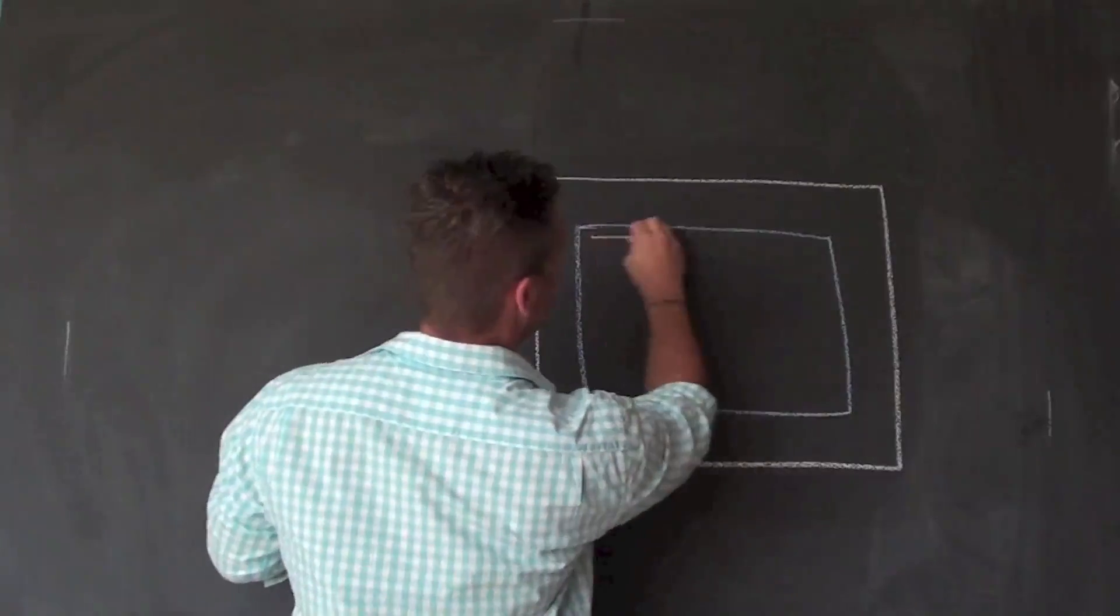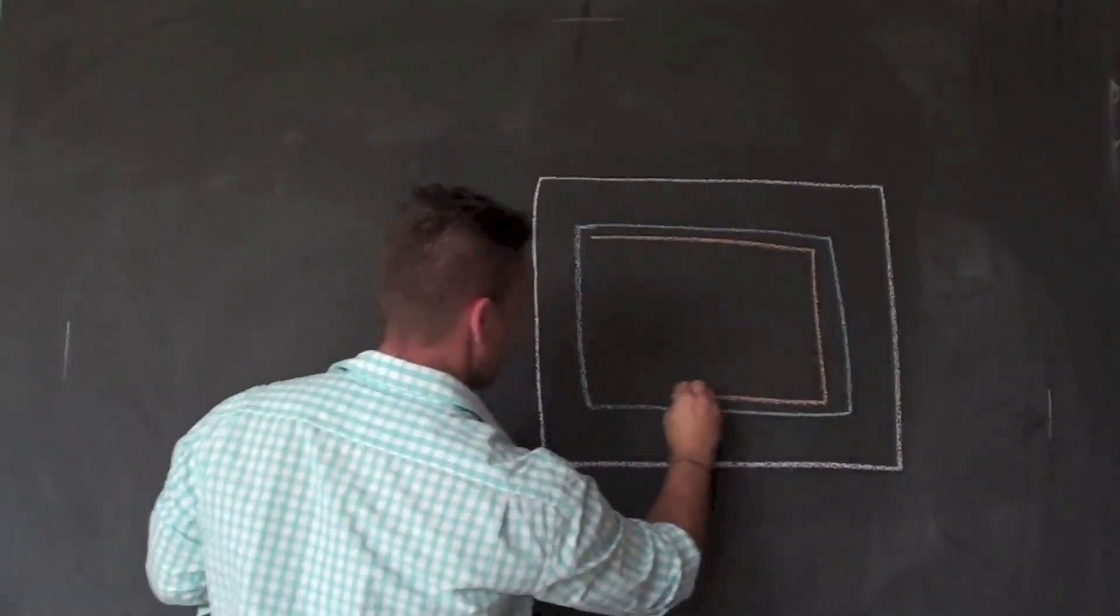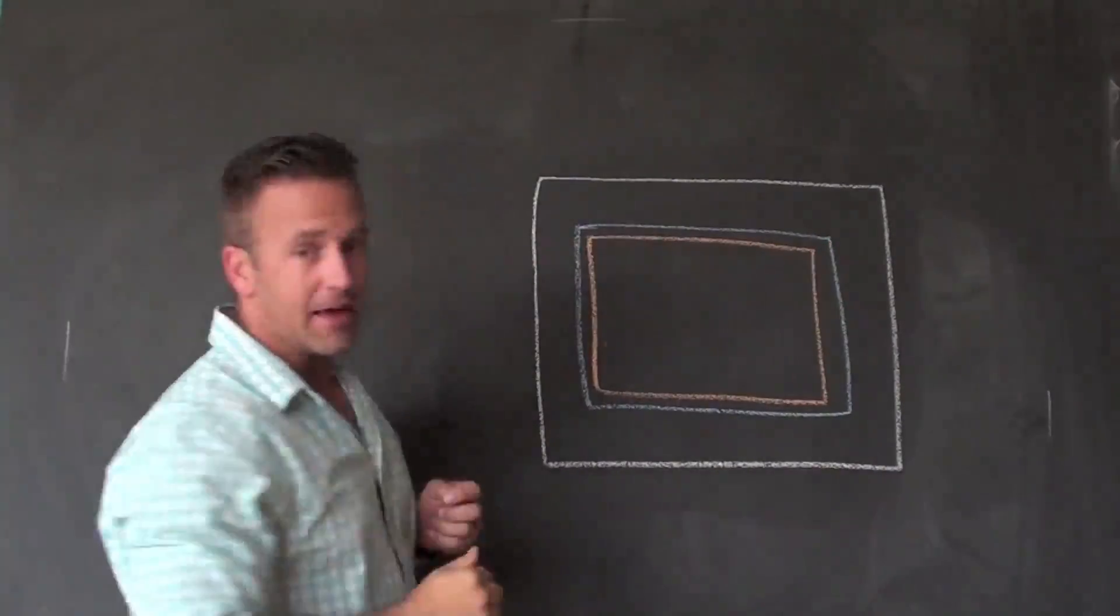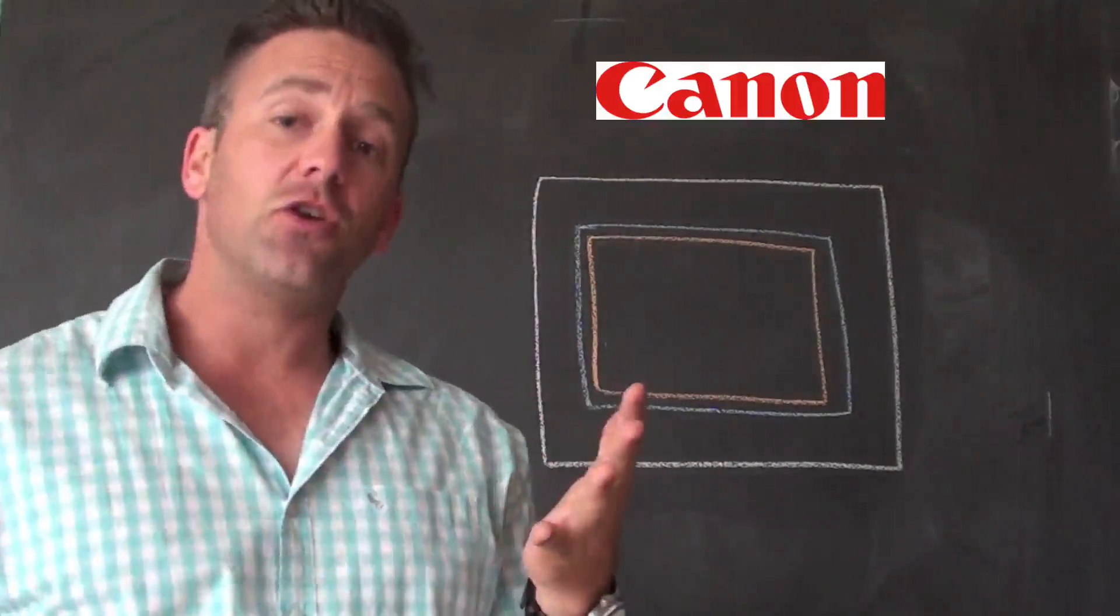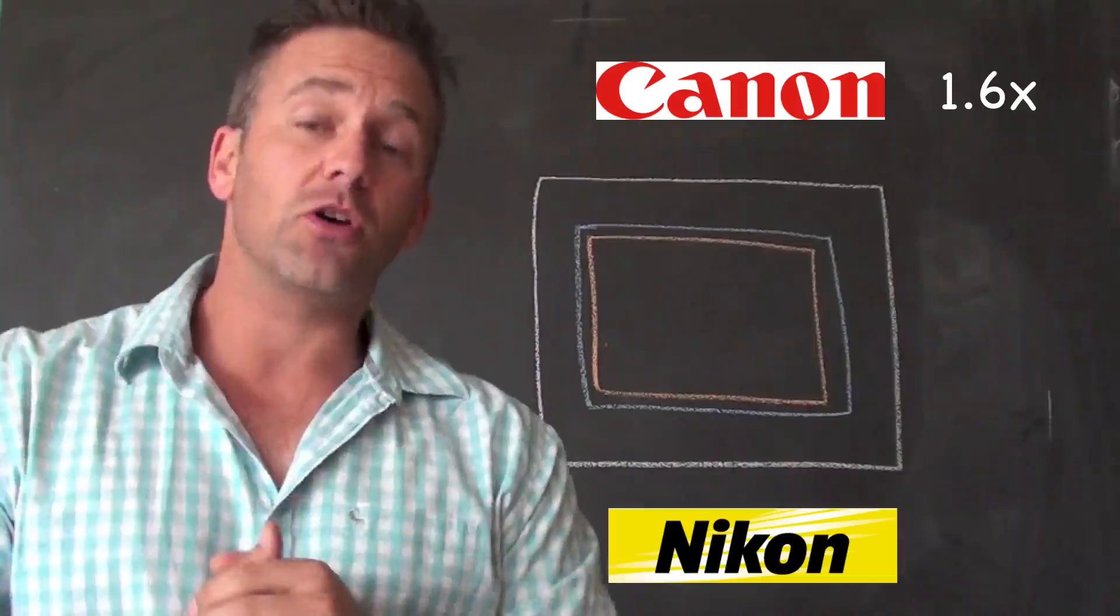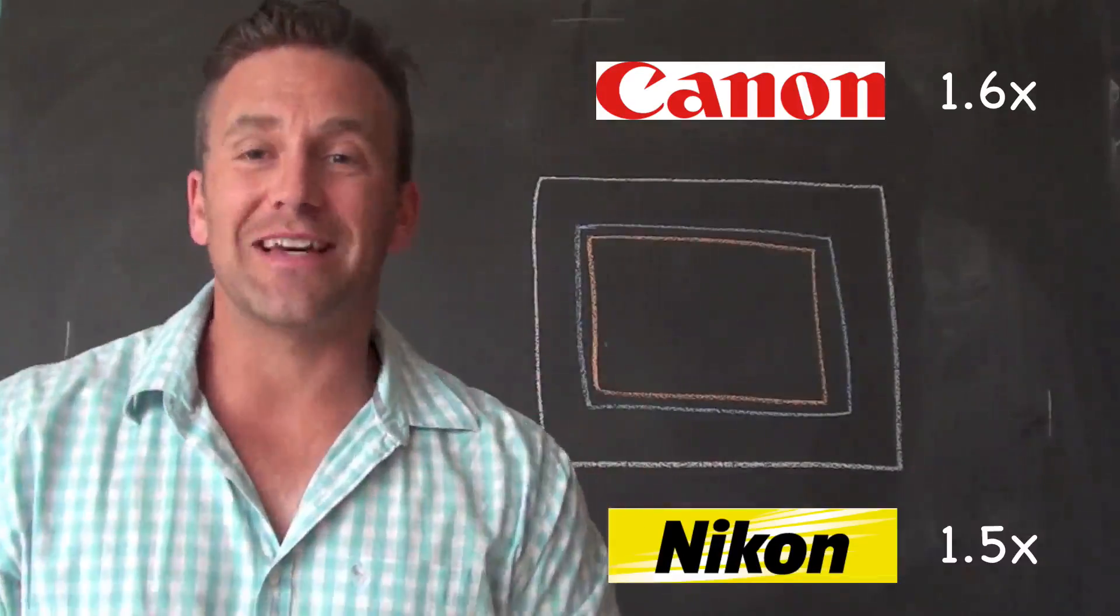You get another one. For example, like there. So, you get different sensor sizes. In general, the two big ones. Canon, you can multiply by 1.6. Nikon, you can multiply by 1.5. But what does it mean?